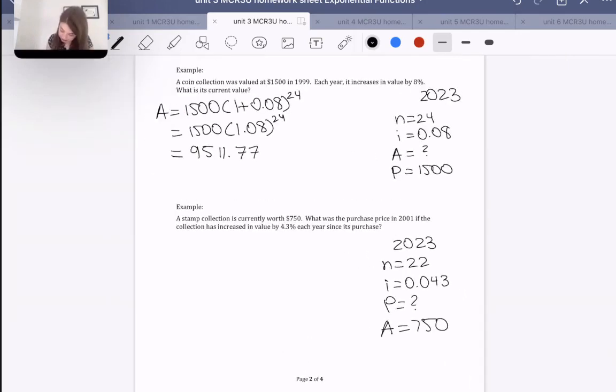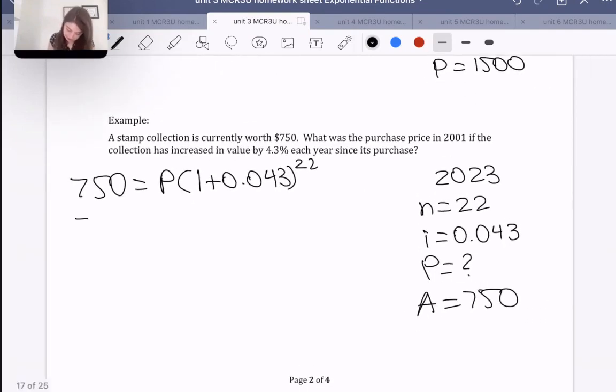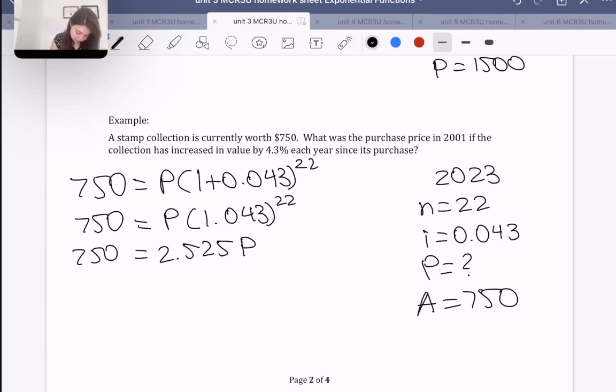Let's see what our answer is. A, which is 750, equals P times 1.043 to the power of 22. Therefore, 750 equals P times 1.043 to the power of 22. Therefore we have 2.525P equals 750. So 750 divide by 2.525. So P is equal to $297.03. So we might say, oh but that's not very much. Well that's true, that's a lot less than the 750.